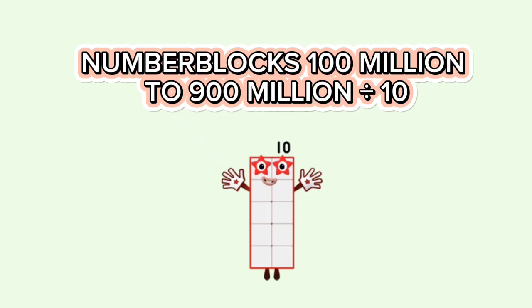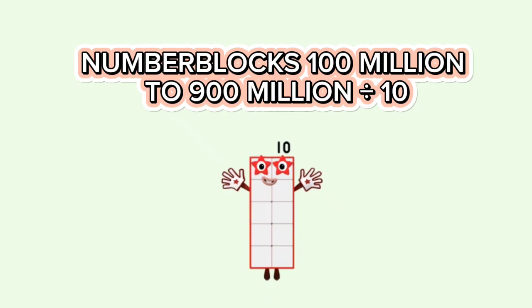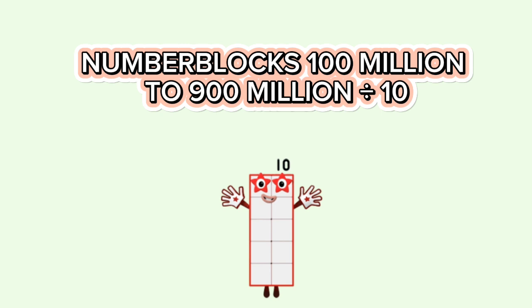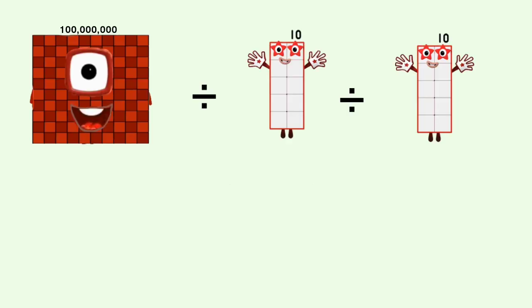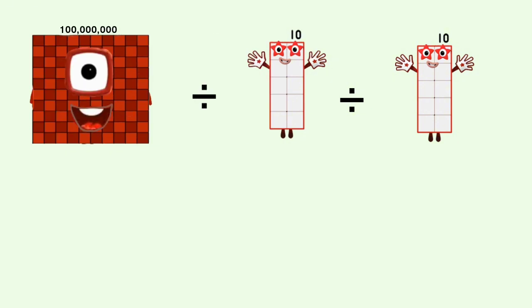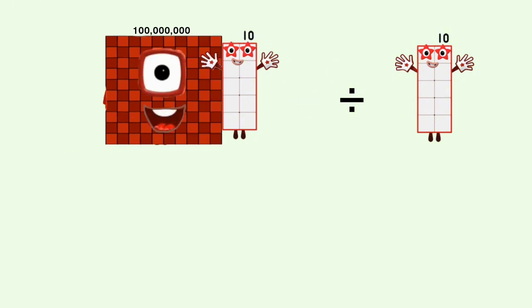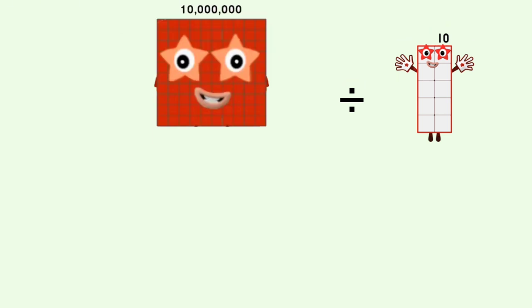Number blocks: 100,000,000 to 900,000,000 divided by 10. 100,000,000 divided by 10 equals 10,000,000.